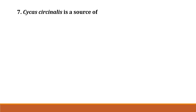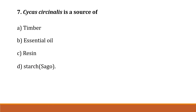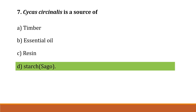Question number 7: Cycas is a source of Option A: timber, Option B: essential oil, Option C: resin, Option D: starch (sago). The correct answer is Option D, starch. Cycas revoluta is also known as Queen Sago.